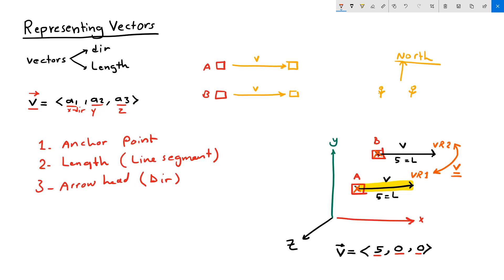To recap, in order to be able to represent or visualize a vector in a 3D coordinate system, we need to anchor it to a point, we need to use a line segment with certain length, and use the arrowhead to be able to point to the direction.